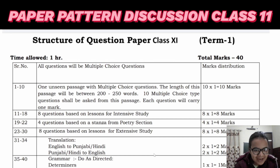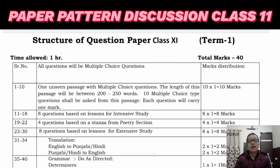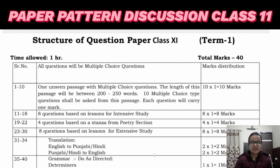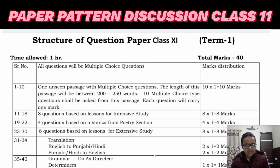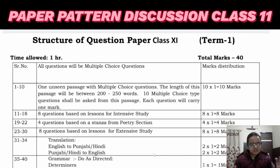Next, there are eight questions based on lessons for extensive study. The extensive study chapters include An Astrologer's Day, Sparrows, and one more lesson. Across these three lessons, you will have eight questions for eight marks. I have already shared content for these, so you can go through them.